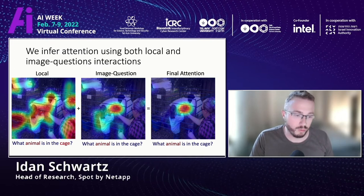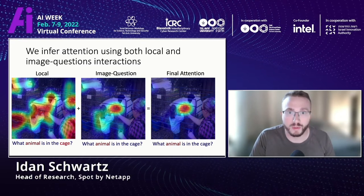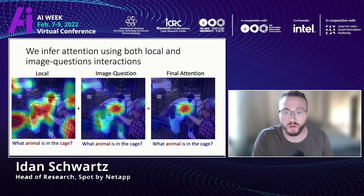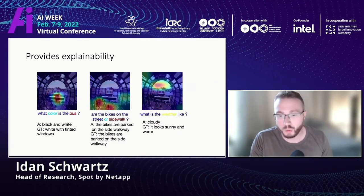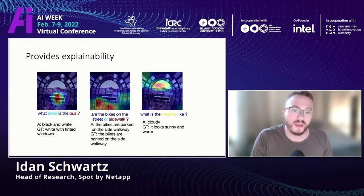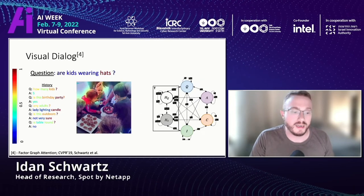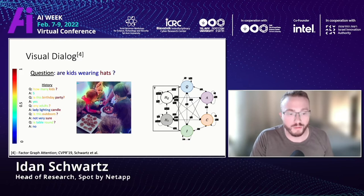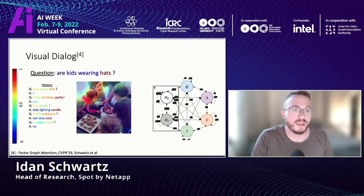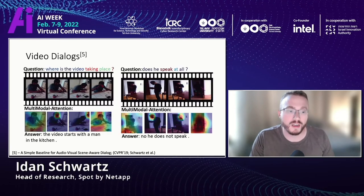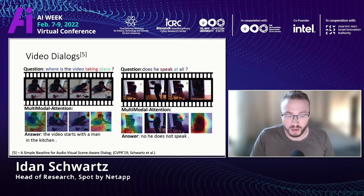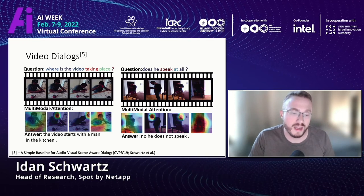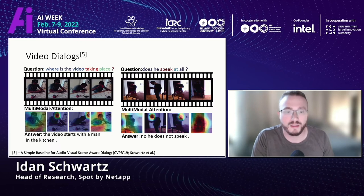Attention provides explainability — it tells us exactly where the model looked to get the answer. More advanced work takes into account many inputs, such as a history of interactions with an agent or an entire video, attending only to relevant parts. With attention, we can process large inputs and still produce good results. This is what humans do: we have many inputs at all times and use attention to filter them. Attention can also enable navigation — for a task like finding the toaster, the model focuses on relevant elements.